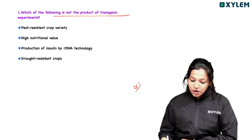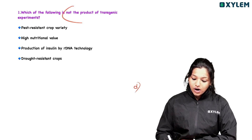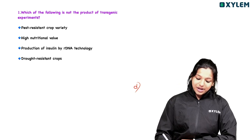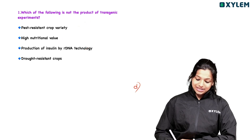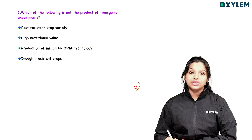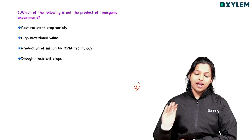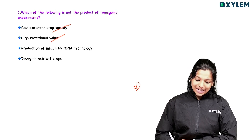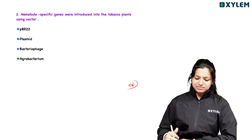Question one: Which of the following is NOT the product of transgenic experiments? Options: A) Pest resistant crop variety, B) High nutritional value, C) Production of insulin by recombinant DNA technology, D) Drought resistant crop. The answer is drought resistant crop — it is not a product of transgenic experiments. Pest resistant crop variety, high nutritional value, and insulin production are all products of transgenic experiments.